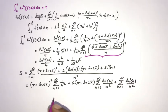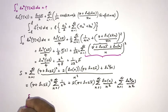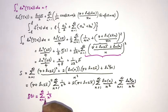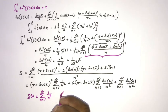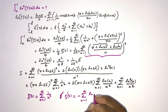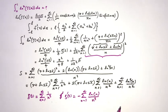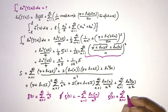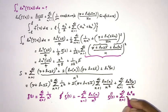Recalling the Riemann zeta function ζ(s) = Σ(n=1 to ∞) 1/nˢ, differentiating with respect to s gives ζ'(s) = −Σ(ln n / nˢ), and differentiating again gives ζ''(s) = Σ(ln²n / nˢ). These derivatives let us evaluate each of the three sums.